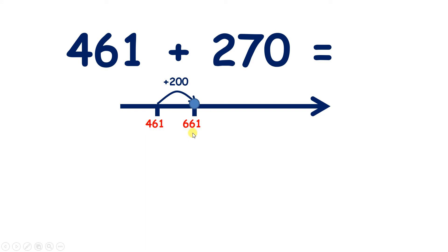If we add 4 tens, that takes us to our next 100, so we have 701. Now how many more tens do we need to add? Let's add 3 more tens, and that takes us to 731. So we've added 70, because we added 40, then 30. So 461 plus 270 equals 731.